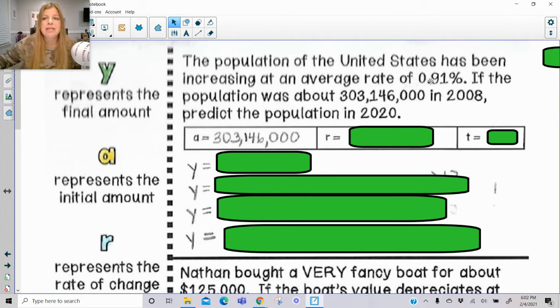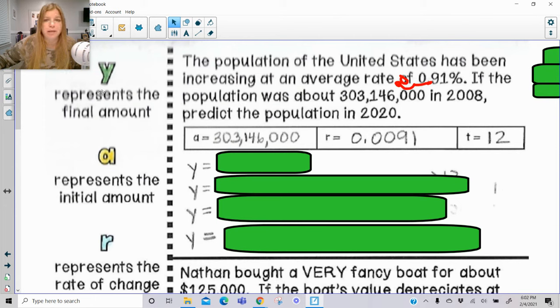The rate is this 0.91%, but we do need to change it to a decimal. So something we have to remember is even though you see a decimal, remember this is actually a percent value. And we still have to move the decimal two spots to the left. And if we do that, the decimal value would be 0.0091. t represents the number of times. So time from 2008 to 2020 would be 12 years. So now here is my formula.